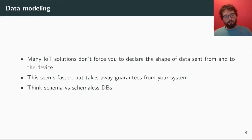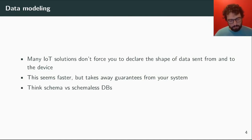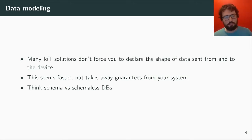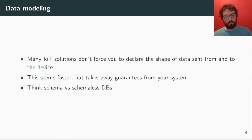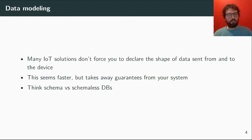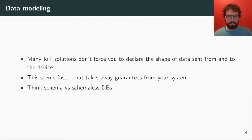Then there is data modeling. Many IoT solutions don't force you to declare the shape of data, which is fine to start out — you can send any random JSON and the platform will digest it — but it actually takes away guarantees from your system. When you want to have an integer and instead receive a string, there is a mismatch you can't solve without having some structure in the data. You can think of this as the difference between a schema and a schemaless database.